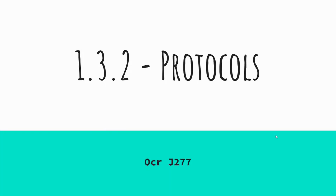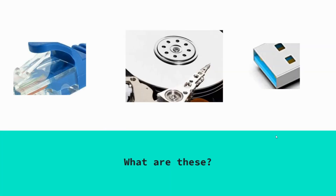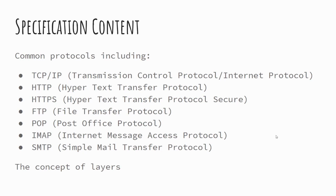We're looking at protocols. Today's starter is just three quick images that are zoomed in. On the left you've got an ethernet cable, specifically the connector. In the middle is an image of a hard disk drive, magnetic storage. On the right hand side you've got a USB stick, zoomed in on the connector that goes into the PC.